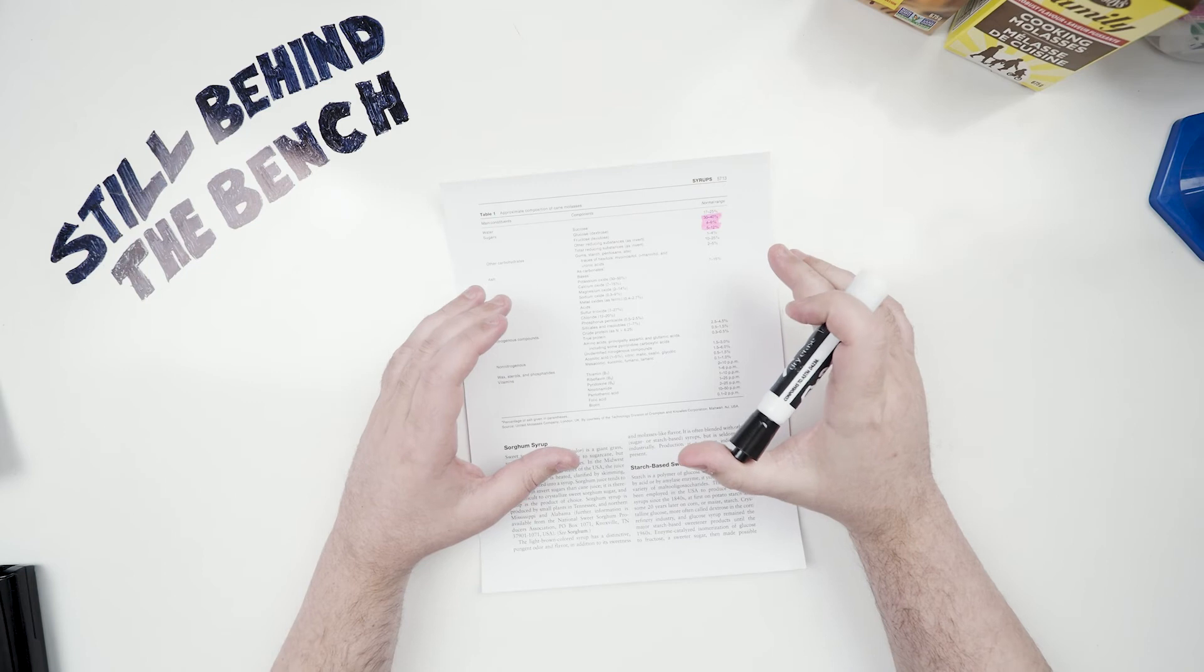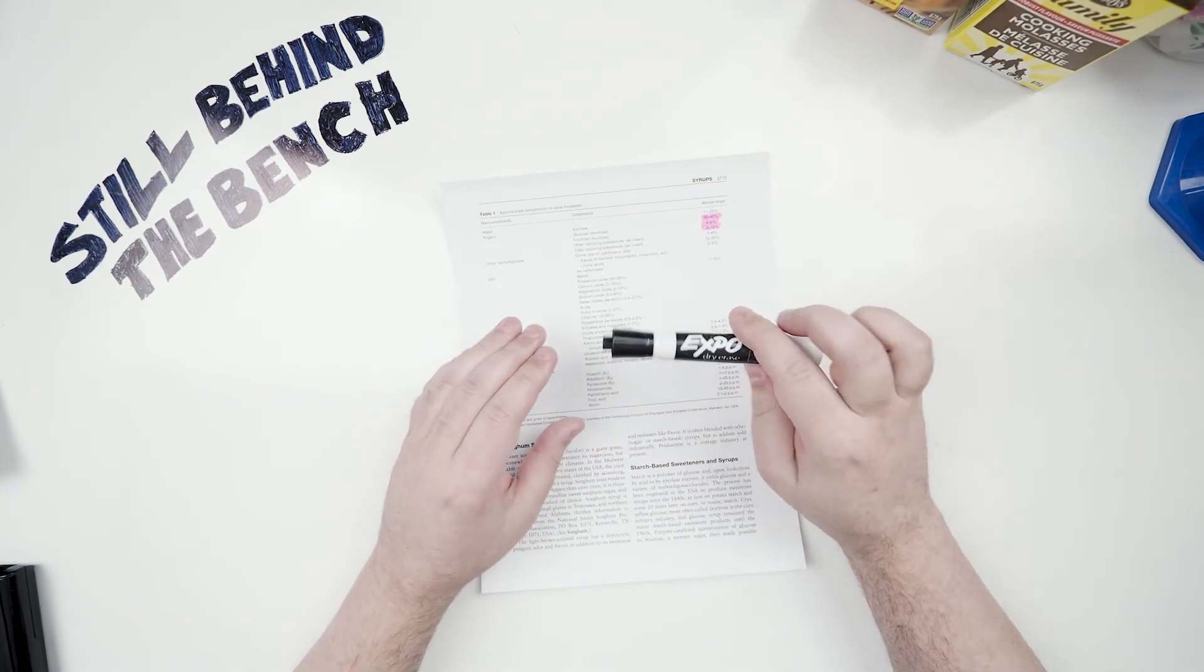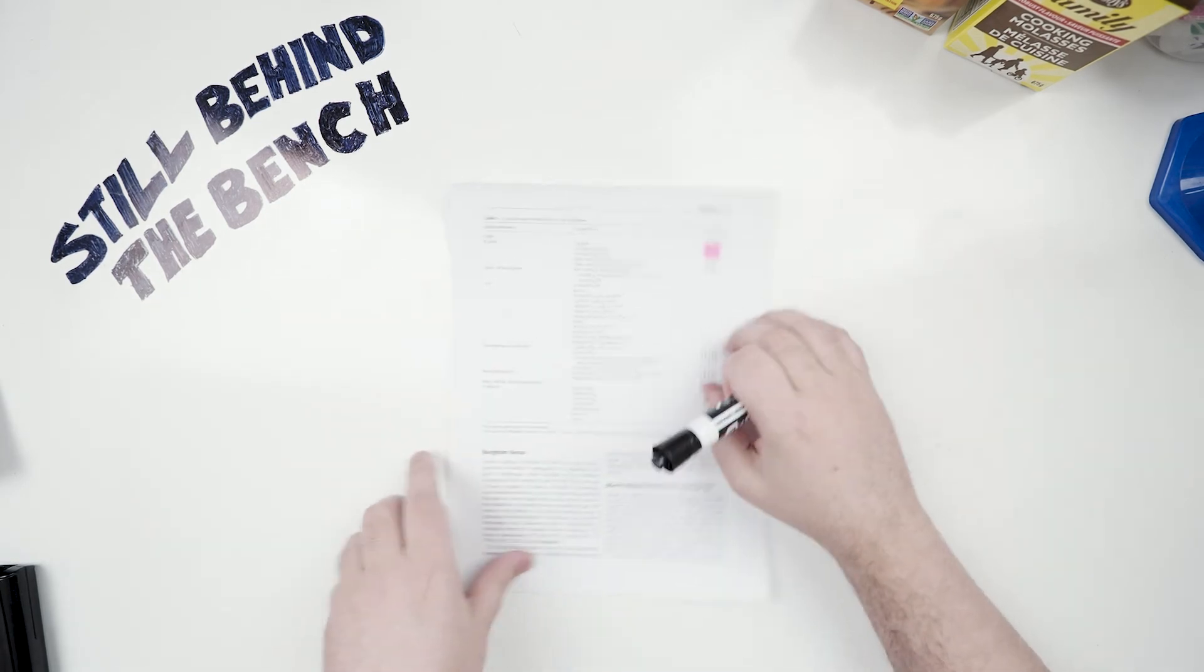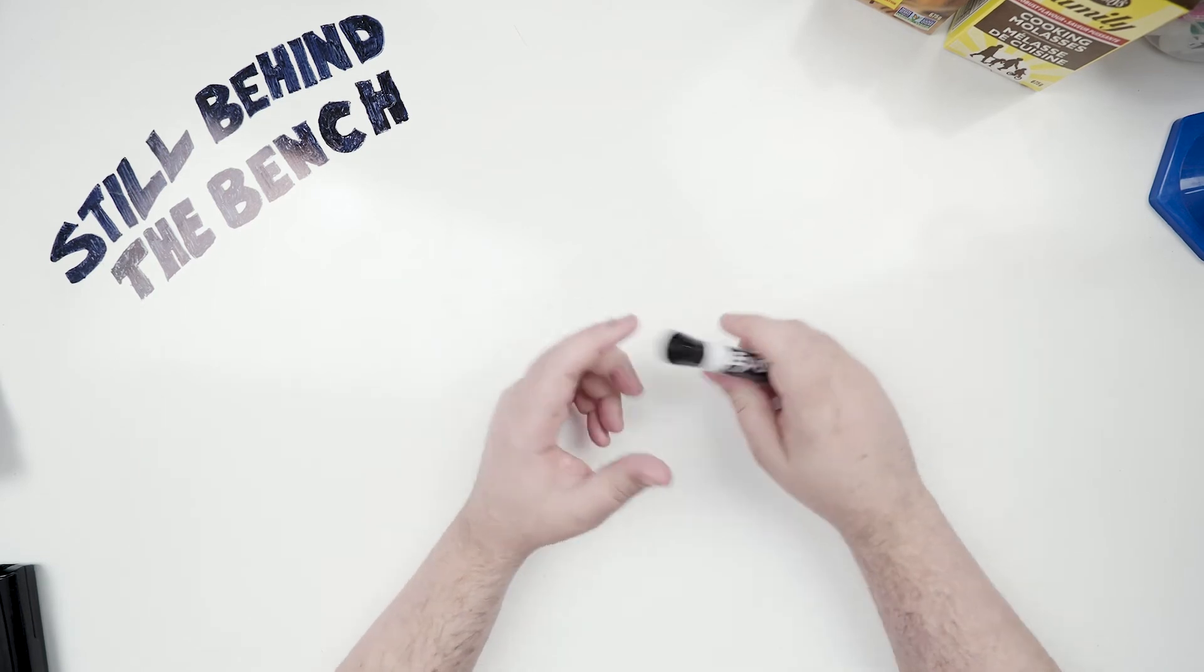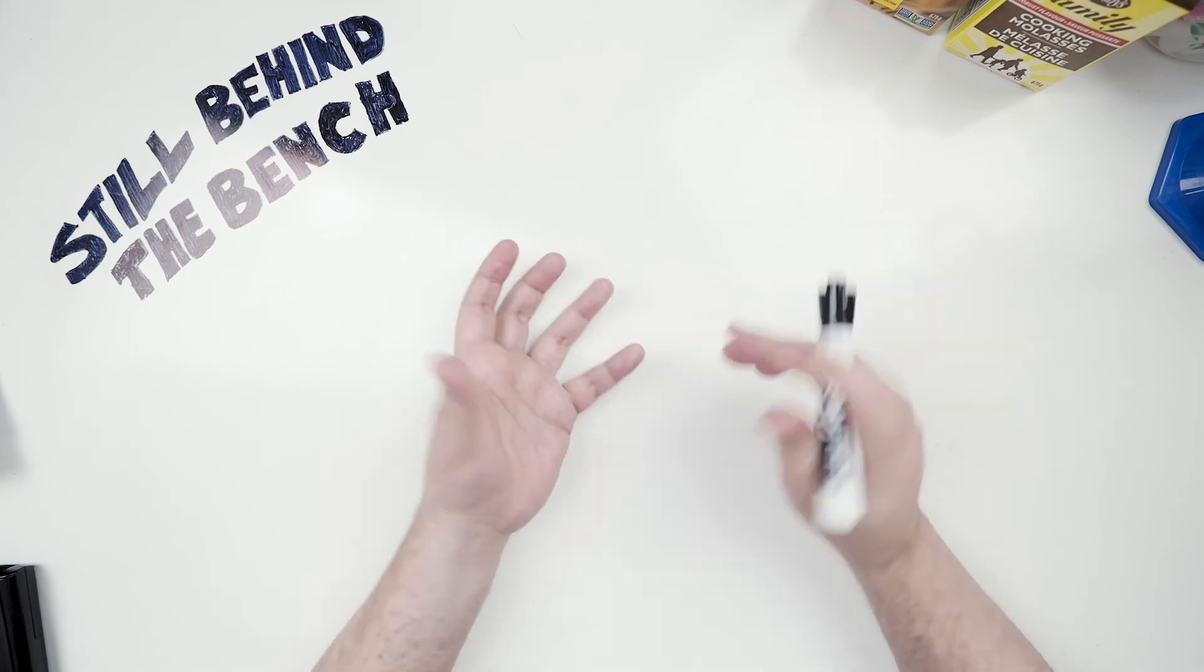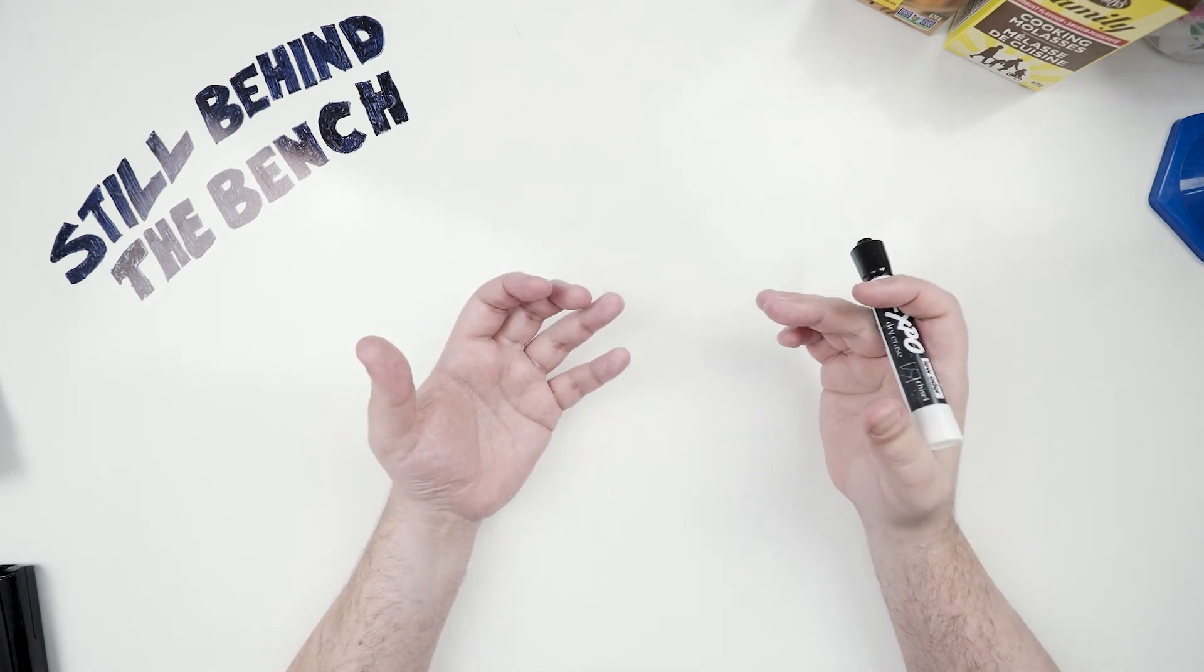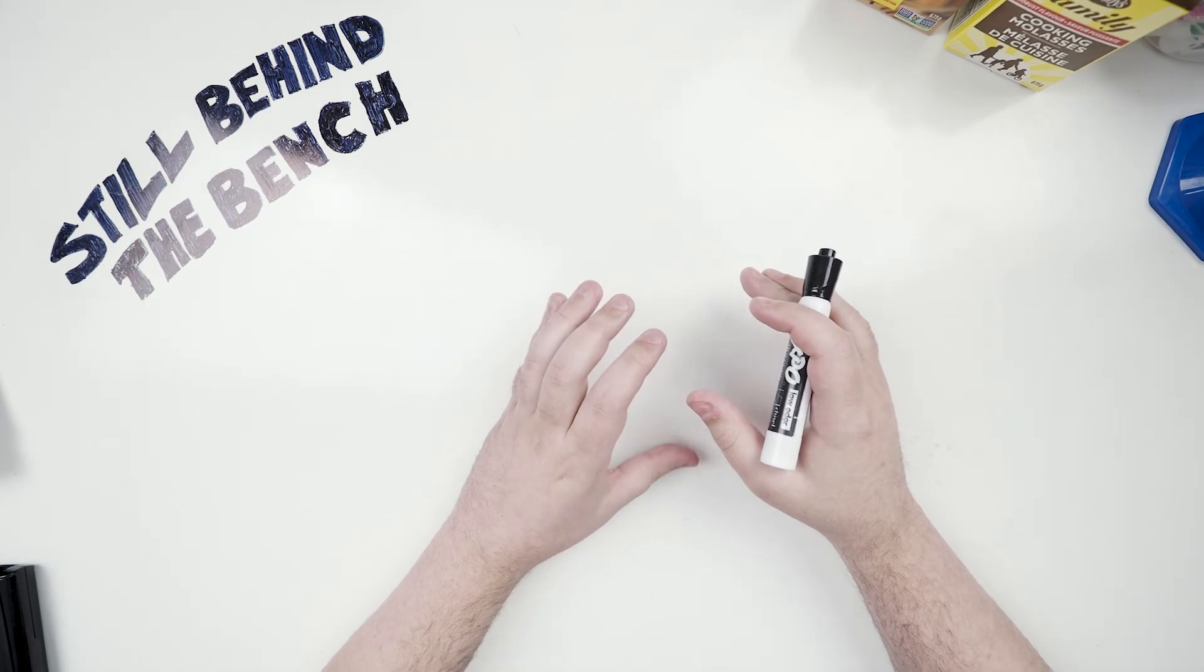So just because there is other things in this molasses doesn't necessarily mean these other things can't be used by yeast or other bacteria. So an example is trehalose. It's a disaccharide. There's actually not much in sugarcane molasses but it's a disaccharide made up of two glucose molecules like maltose, it's just they're attached differently. It can't be fermented by Saccharomyces cerevisiae, the yeast we commonly use to make alcohol, but it can be assimilated by it and used for other metabolic processes.